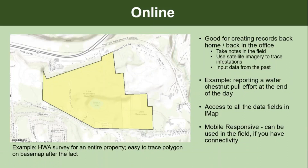Another example would be reporting a water chestnut pull — you conduct the pull during the day and then in the evening or the next day you go online and report that as a treatment based on your notes and looking at the satellite imagery. One thing to note is that this online interface is actually mobile responsive, so you could go out in the field and collect data by going to imapinvasives.org and logging in — you just need a good Internet connection or phone service.